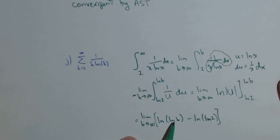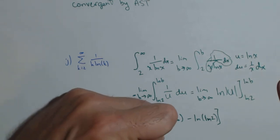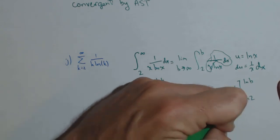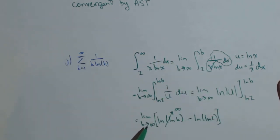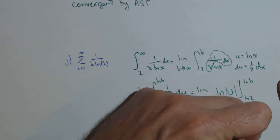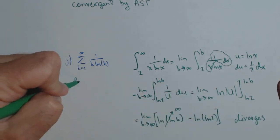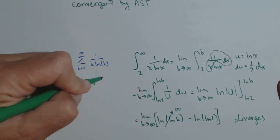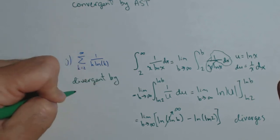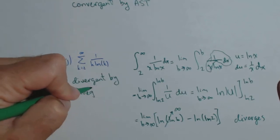And so as the argument of natural log goes to infinity, this whole piece is going to go to infinity, so this improper integral diverges. So our original is divergent by the integral test.